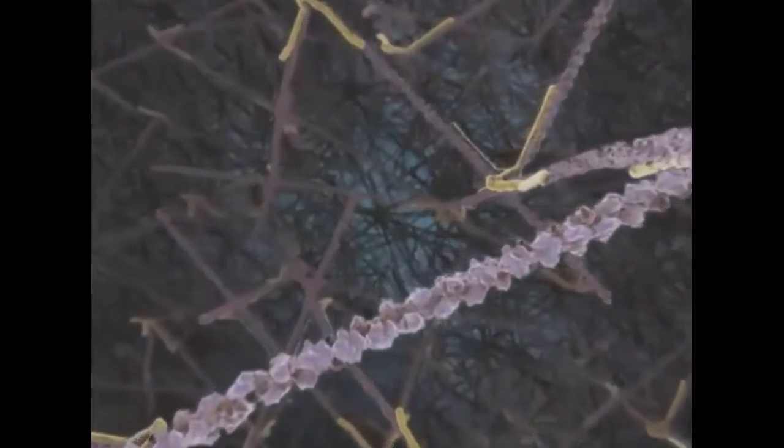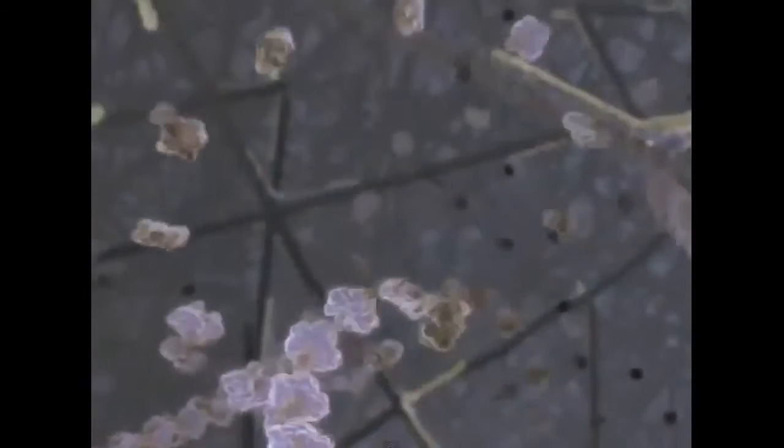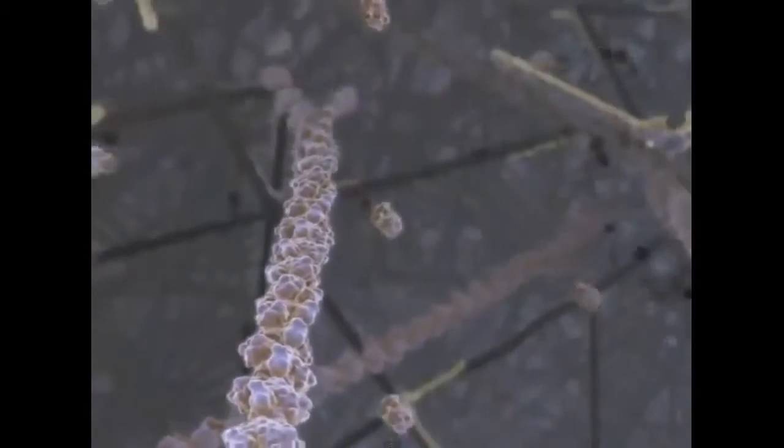Filaments, capped at their minus ends by a protein complex, grow away from the plasma membrane by the addition of actin monomers to their plus end.